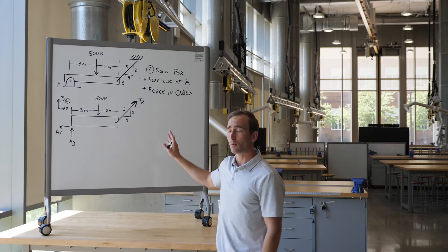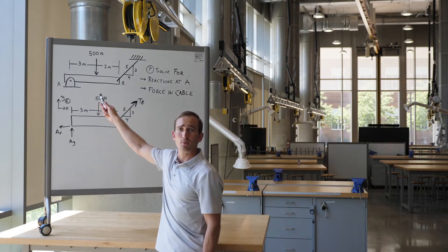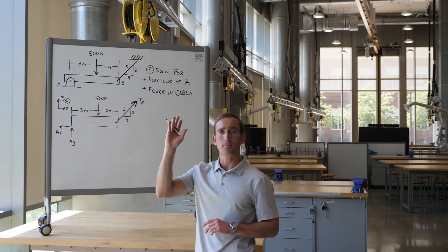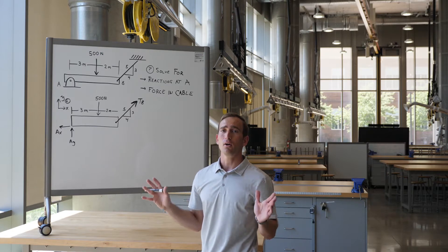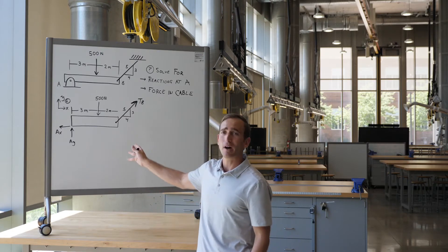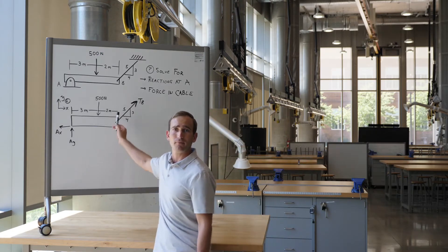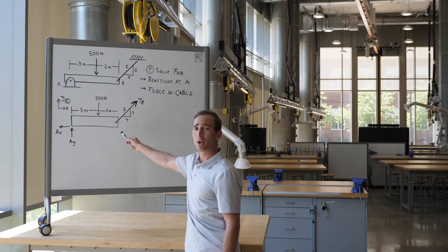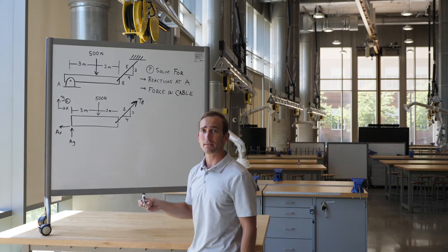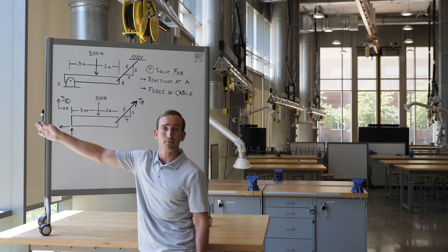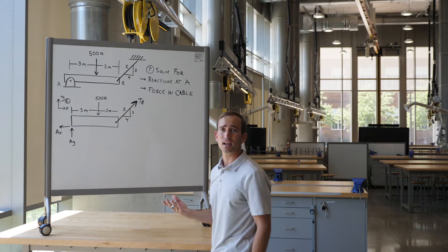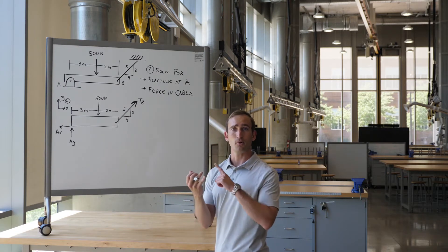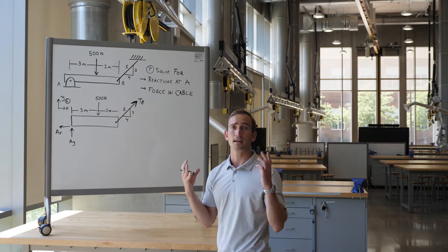I've drawn the free body diagram and replaced the pin support at A with two forces, AX and AY. It doesn't matter whether you draw those up, down, left, or right — it'll all work out in the end. I've drawn them up and to the left because I'm assuming AY is fighting the downward force, and because tension TB can only pull to the right, I'm assuming AX goes to the left. Now that we've got this set up, we want to use our system of equations — the sum of the forces in Y — to solve.